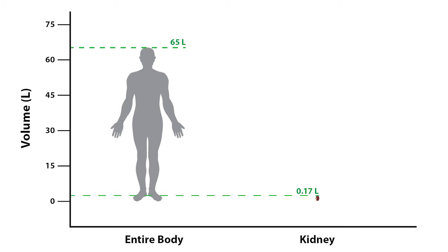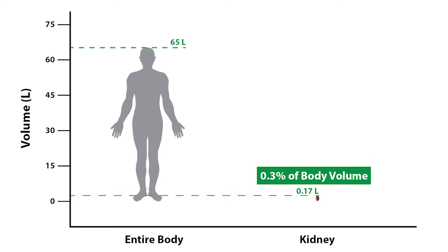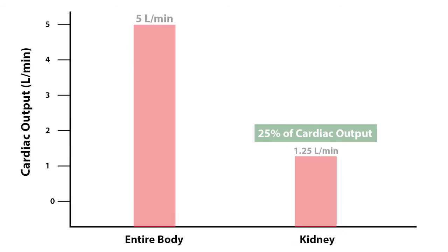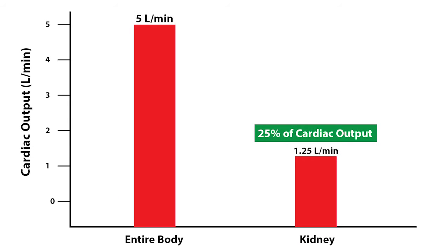This means that kidney volume represents only 0.3 percent of total body volume — that's impressive considering the kidneys receive 25 percent of the cardiac output. So how does the kidney do this? Let's answer that by first examining the gross anatomy of the kidney.